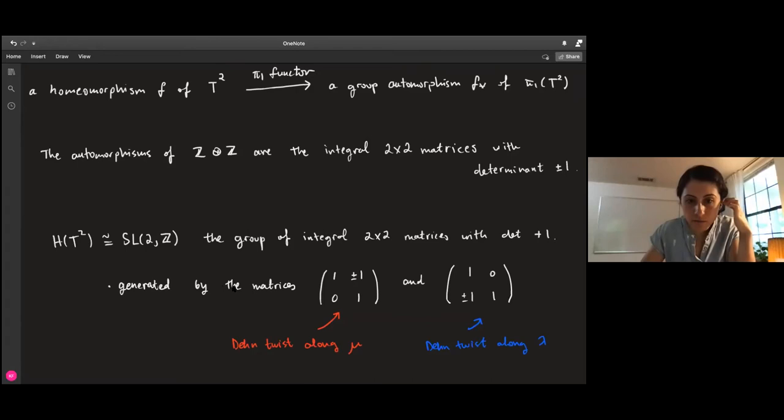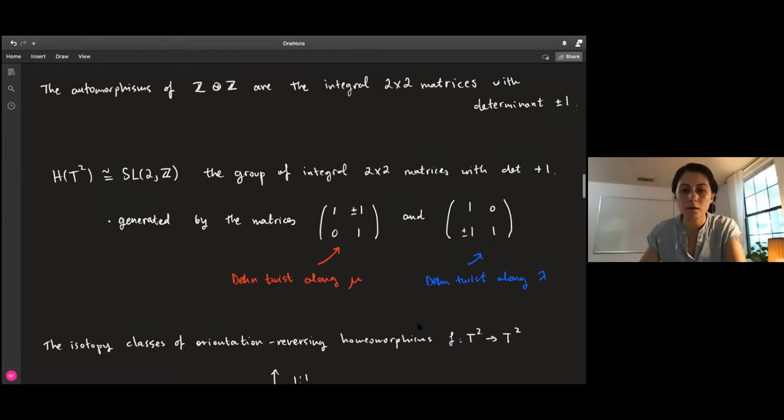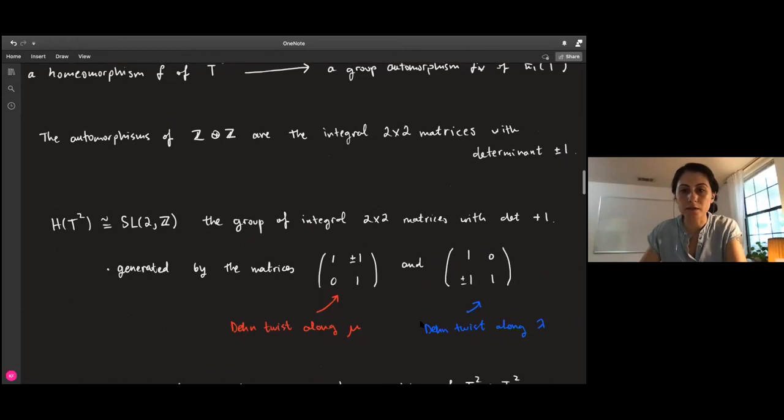We know this group is generated by the matrices [1,1;0,1] and [1,0;1,1], which turn out to describe the Dehn twist along the meridian and the Dehn twist along the longitude, which is compatible with Lickorish's theorem.